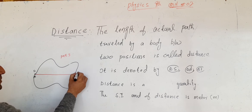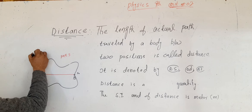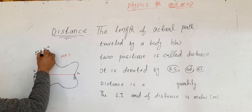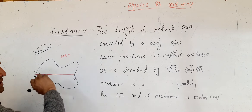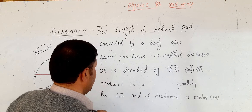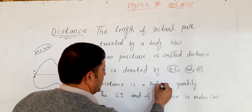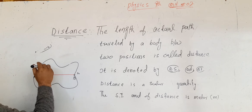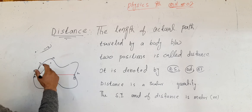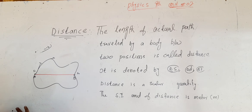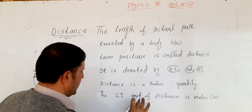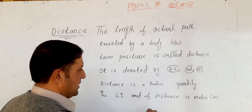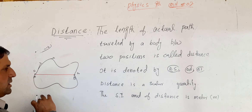The distance between two positions S1 and S2 is denoted as delta S, where delta S equals S2 minus S1. Distance is a scalar quantity — it has magnitude but no direction. Its SI unit is meter.